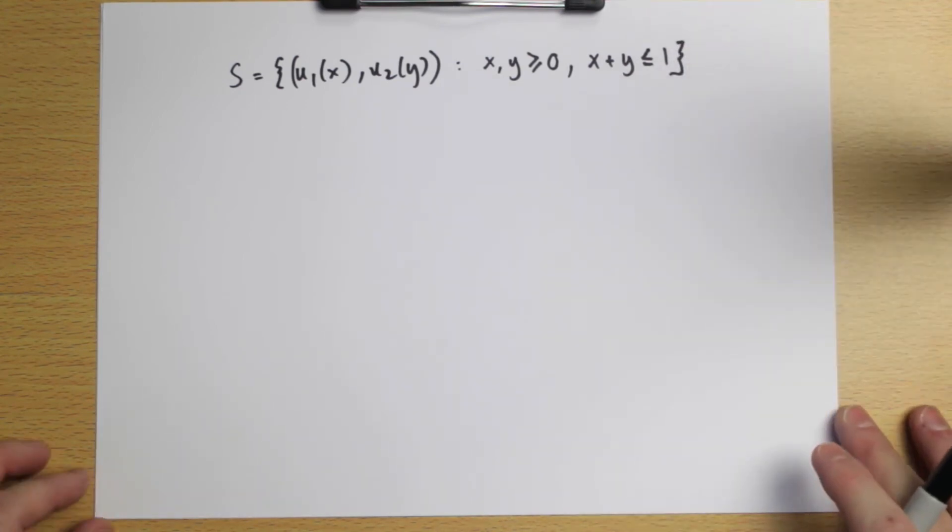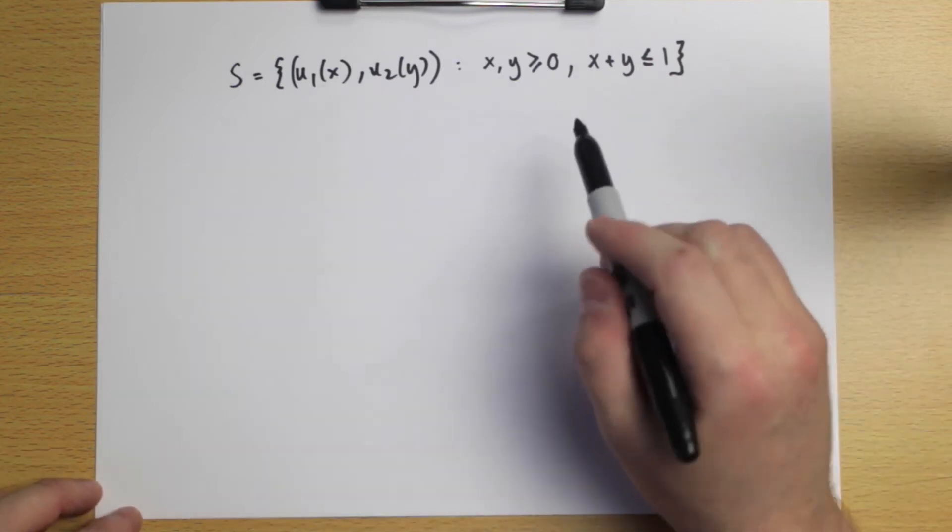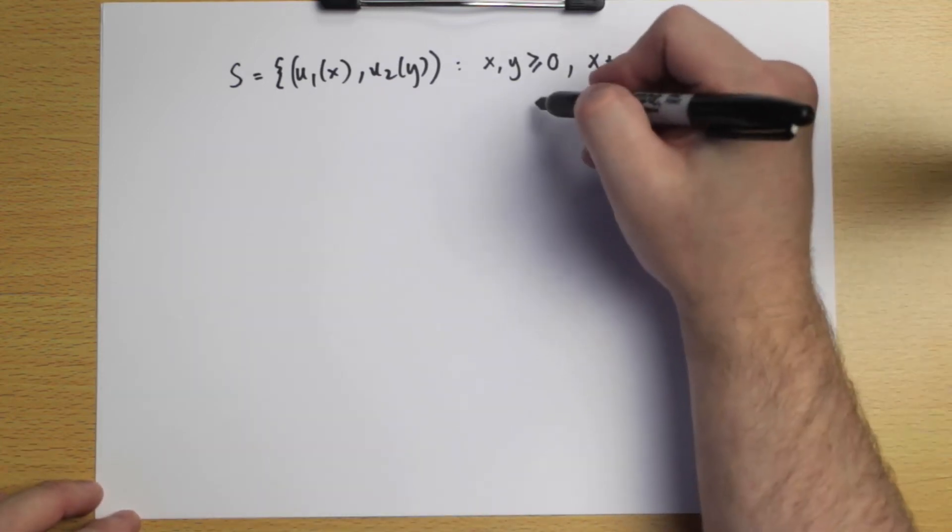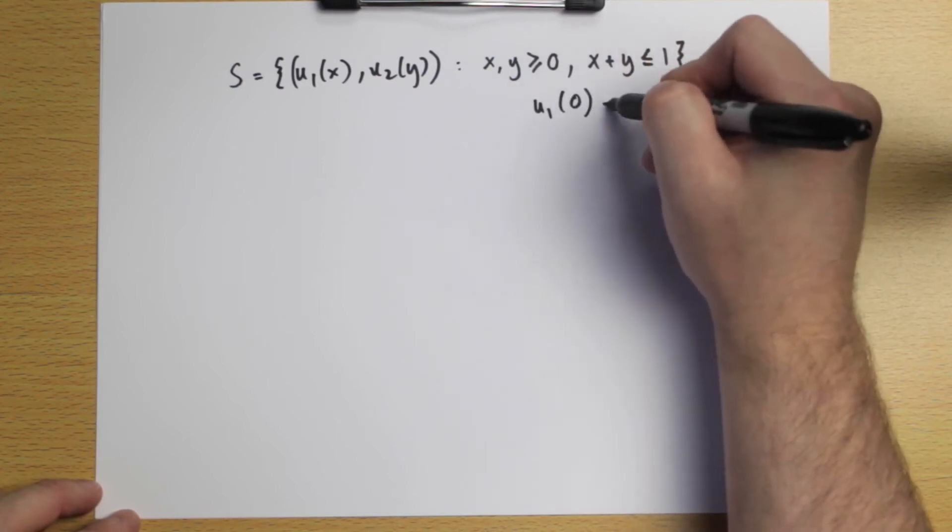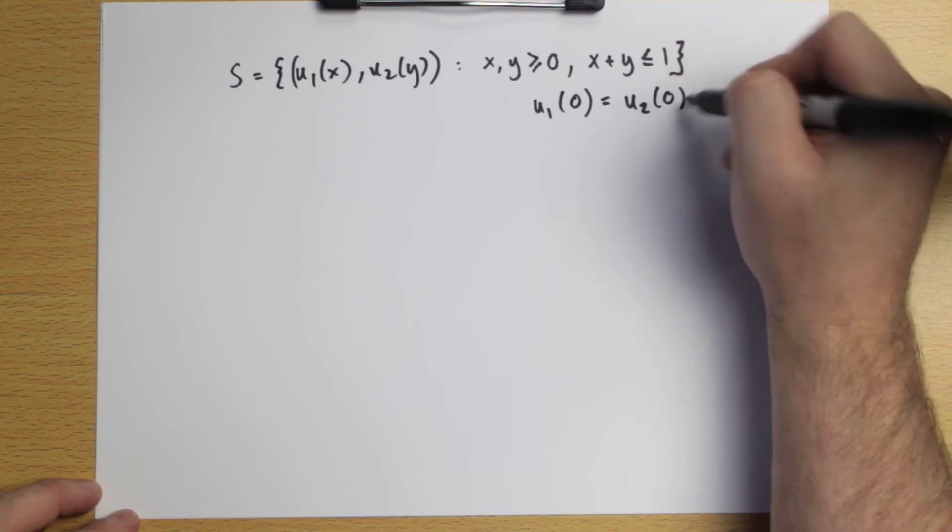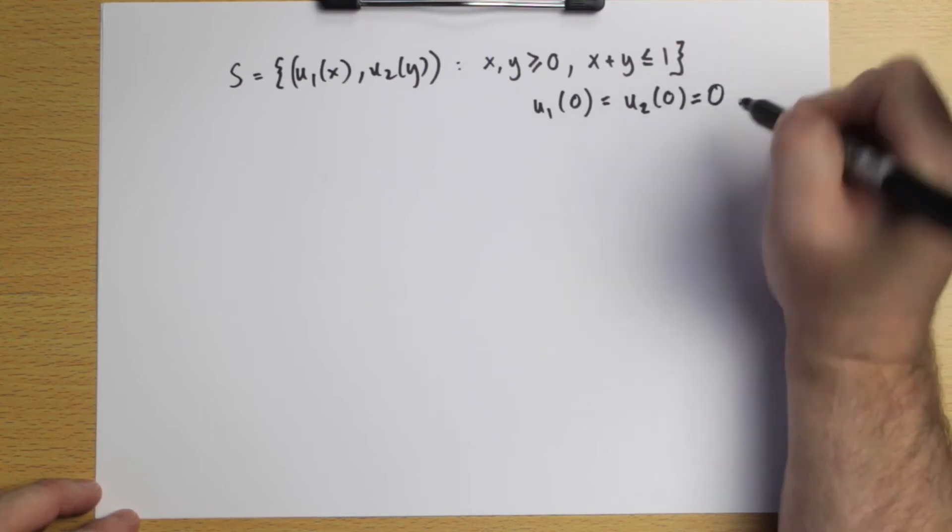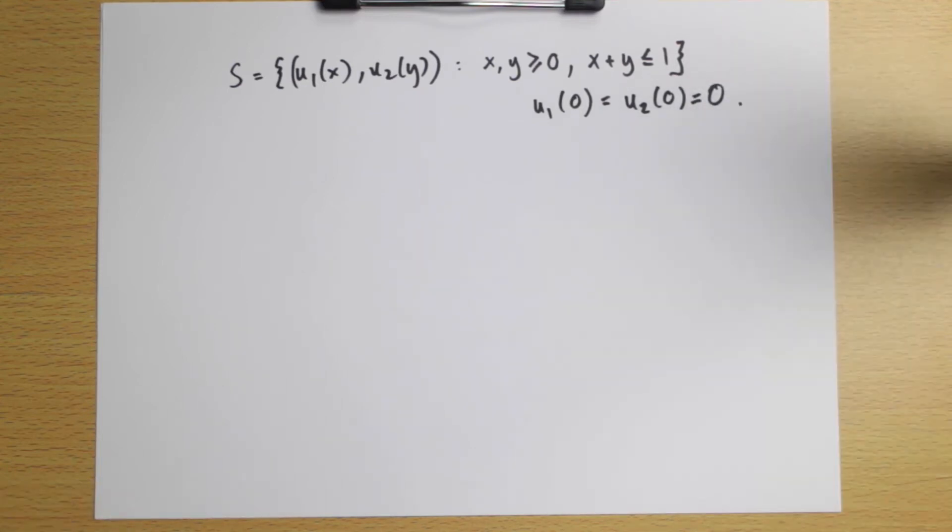So this was the bargaining game and the disagreement point was zero, zero. Effectively, we're setting the utility of both players receiving zero dollars equal to zero. So that's fixed.